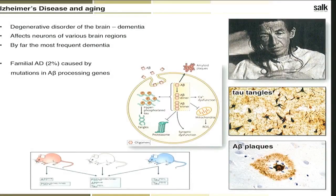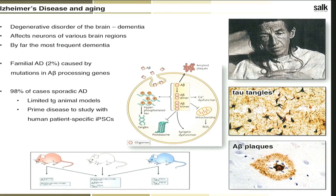Most research in the past has focused on familial AD cases, which however only represent about 2% of all cases. Familial means inherited mutations in genes that mostly affect the APP processing pathway into A-beta. The vast majority of cases are sporadic, with no known genetic reasons for the disease, making it very difficult to study in transgenic animal models. This makes it a prime disease to study in the human system, using tools like human embryonic stem cells or induced pluripotent stem cells.